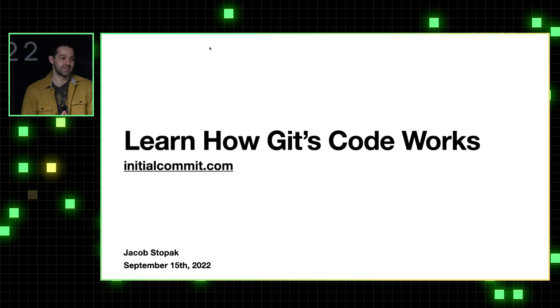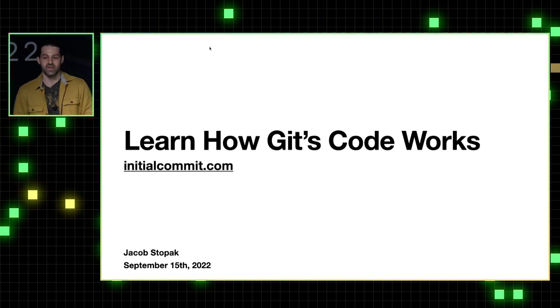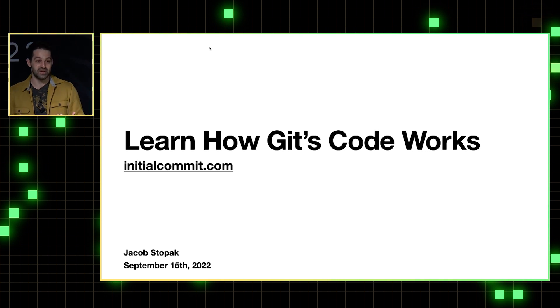So sort of in the spirit of that, today we're going to examine the initial commit of Git's code, which was made by Linus Torvalds in April 2005. And we'll start by looking at the structure of the initial commit's code base, and then we'll get into some code extracts of some of Git's core functionalities.